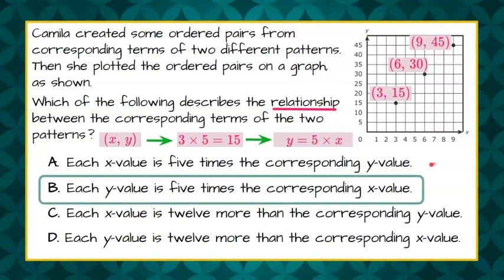So we know that our correct answer is B, that y is equal to 5 times the value of x. And we know that we've ruled out A, and we know that x is not 12 more than the y. 15 plus 12 is much greater than 3. And D, 15 is equal to 3 plus 12, but it doesn't check for all three ordered pairs.